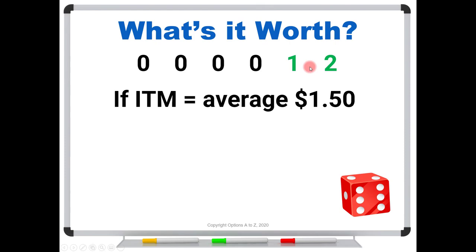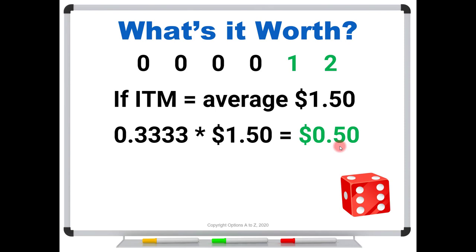So once again, if our call option is in the money, the average payoff is one dollar fifty. Now we just have to say, what's the probability that we're in the money? Well, there's only two ways that we get a payoff, two ways that we're in the money, out of six, which is a third. So watch this. We take a third times the average payoff of one dollar fifty. The fair value is fifty cents. And that's the price that wouldn't favor the buyer or the seller.